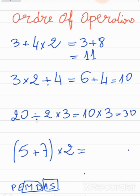When we have only multiplication and division, go left to right. Here we have parentheses, and parentheses are the strongest, so we calculate inside them first. 5 plus 7 is 12, and 12 times 2 is 24.